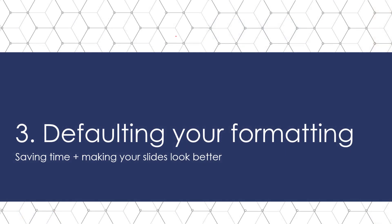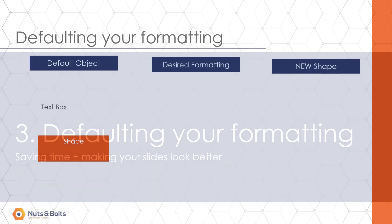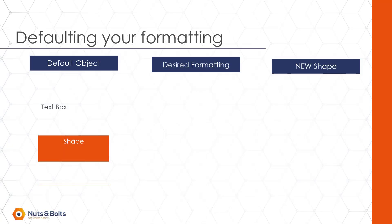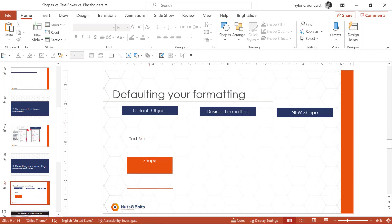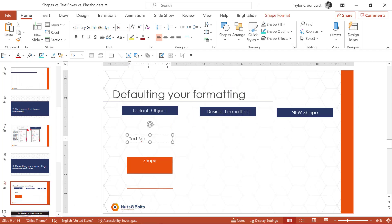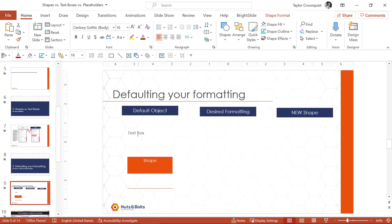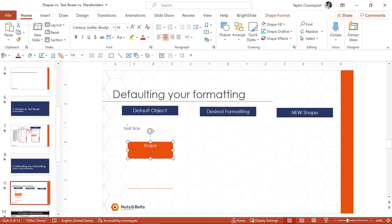So let's look at what default formatting means for your shapes, lines, and text boxes, and what I recommend. In this PowerPoint template, I have the current default text box, the default shape, and the text alignment and default line left as-is.